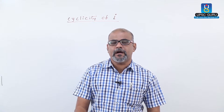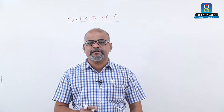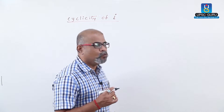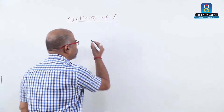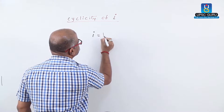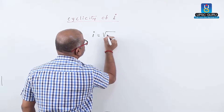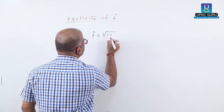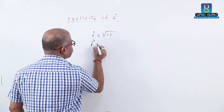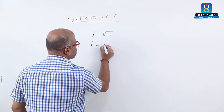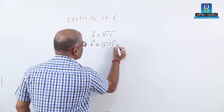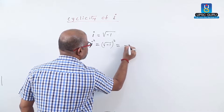Cyclicity of number i. i is the imaginary number and its value is root minus 1, that is i equals to square root of minus 1. If we square this we get i square equals to root minus 1 squared, that is minus 1.